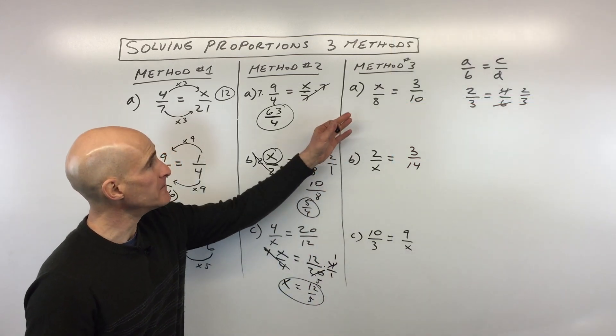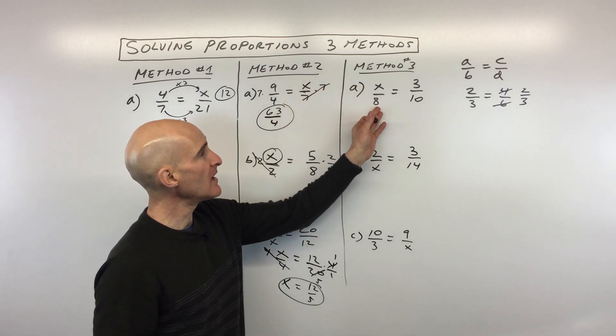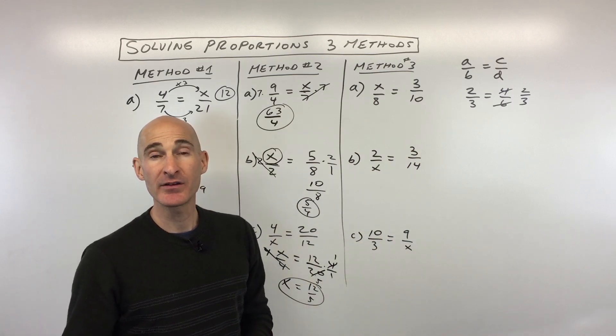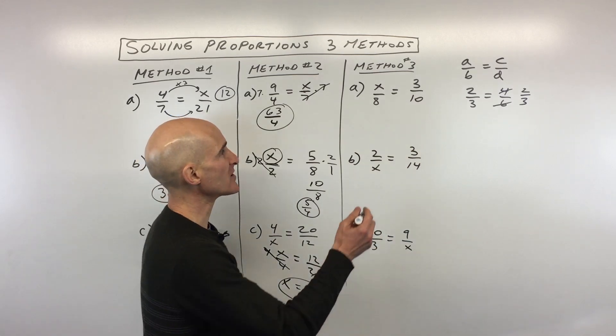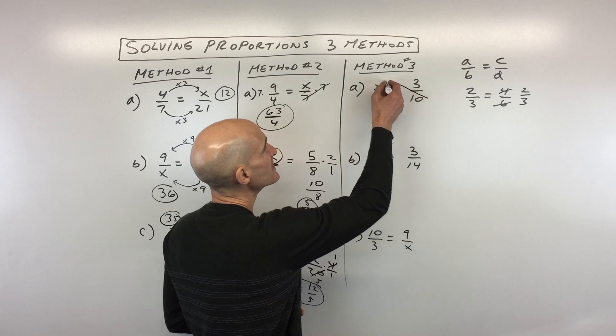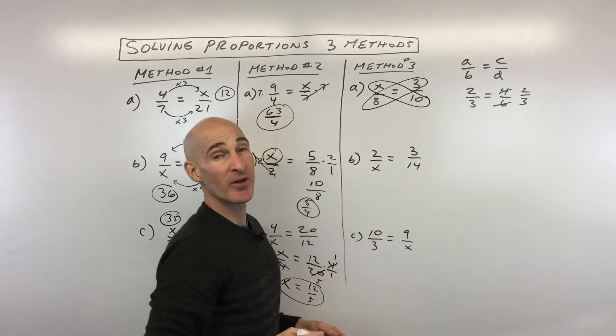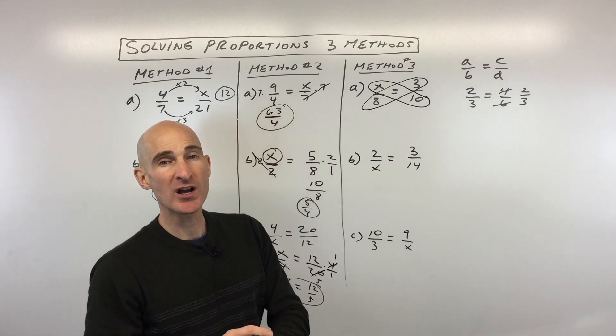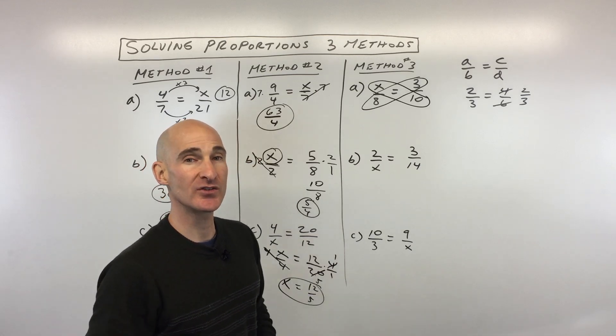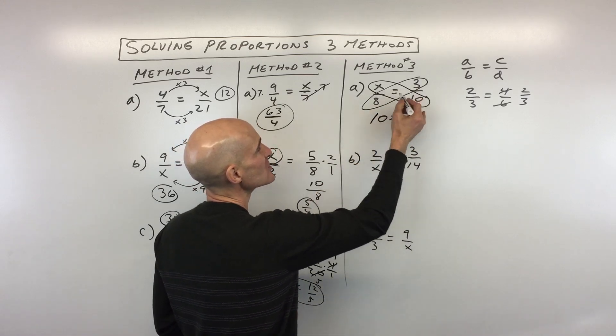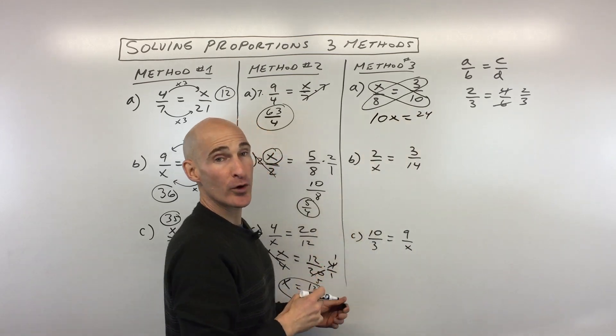So my last method, method number three, and that's that we're going to solve this by using the cross product method or the cross multiplying method, however you want to say that. And the way this works is that this diagonal here multiply together equals this diagonal here multiply together. And what this does when you cross multiply is it gets rid of the fractions. Okay, which a lot of times students don't like fractions. That might be your situation as well.